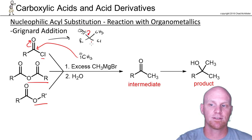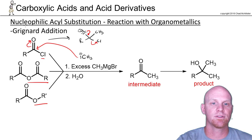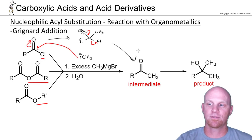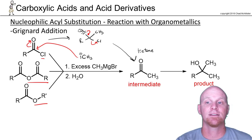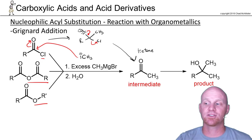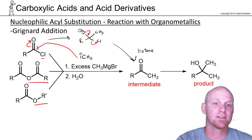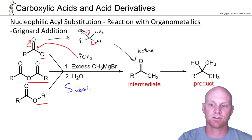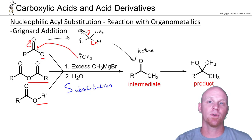These electrons come right back down, we kick off the leaving group, and that leads us to our intermediate — which is a ketone itself. The first reaction is nucleophilic acyl substitution, and that forms a ketone.